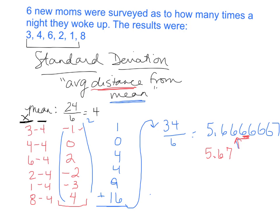In order to get the true average — the standard deviation — I take the square root of 5.67. The square root of 5.67 gives me 2.38. So my standard deviation for this list is 2.38. That means the average number of times those moms got up is four, and most of those moms were within about two times getting up from that average.